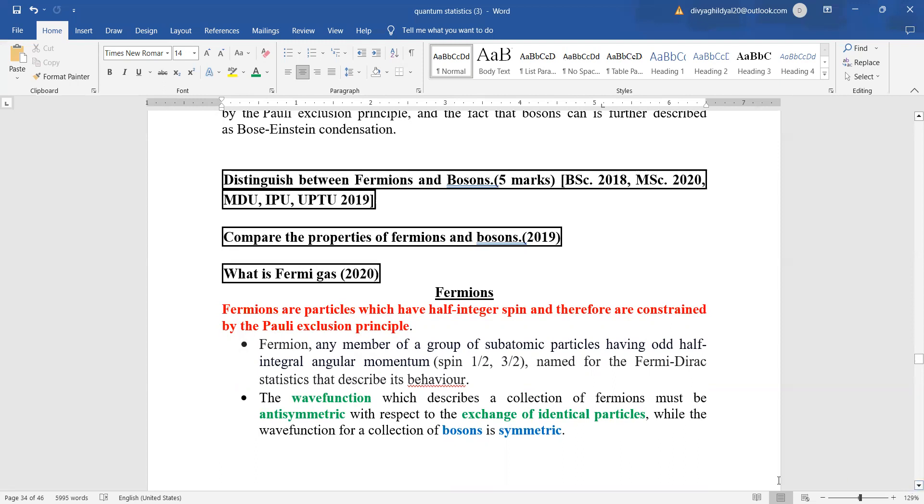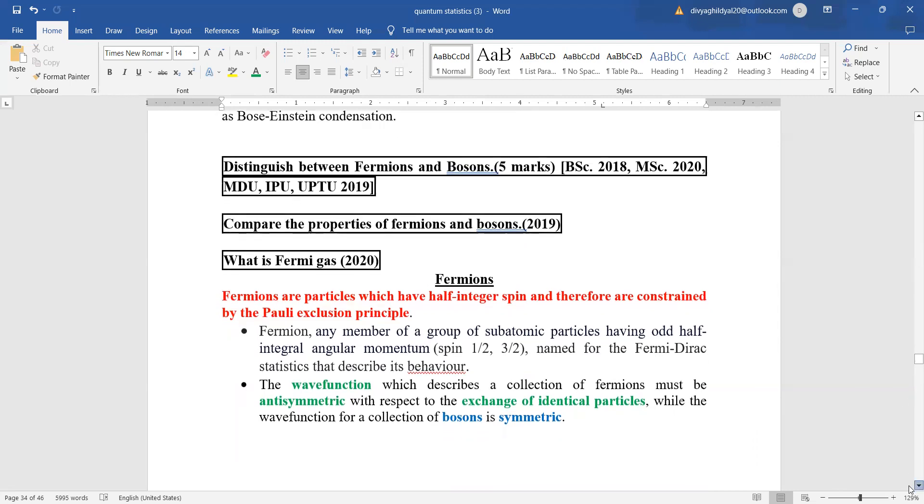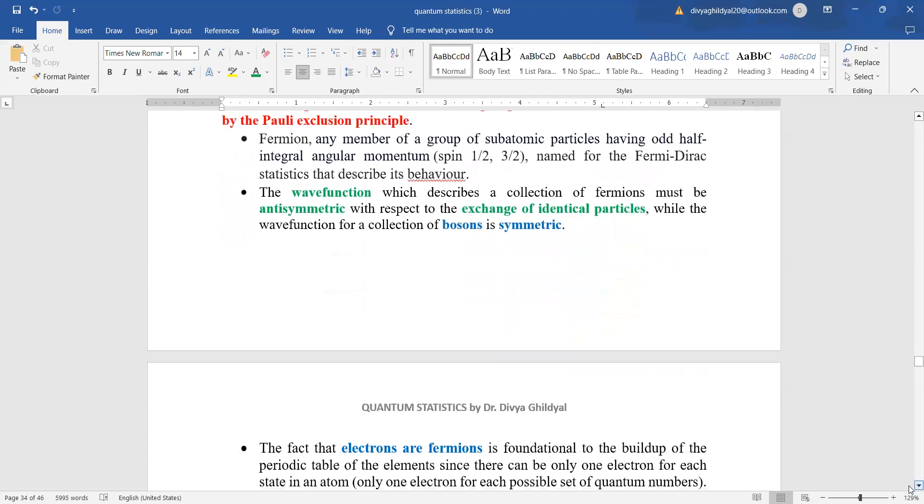Fermions are particles which are having half-integer spin and they are constrained by the Pauli's exclusion principle. Fermion, any member of a group of subatomic particles having odd integral, half-integral angular momentum spin like half, three by two, etc., have been named after Fermi-Dirac statistics. Now the wave function which is going to describe a collection of fermions will be asymmetric in this case, and in bosons it is going to be symmetric.